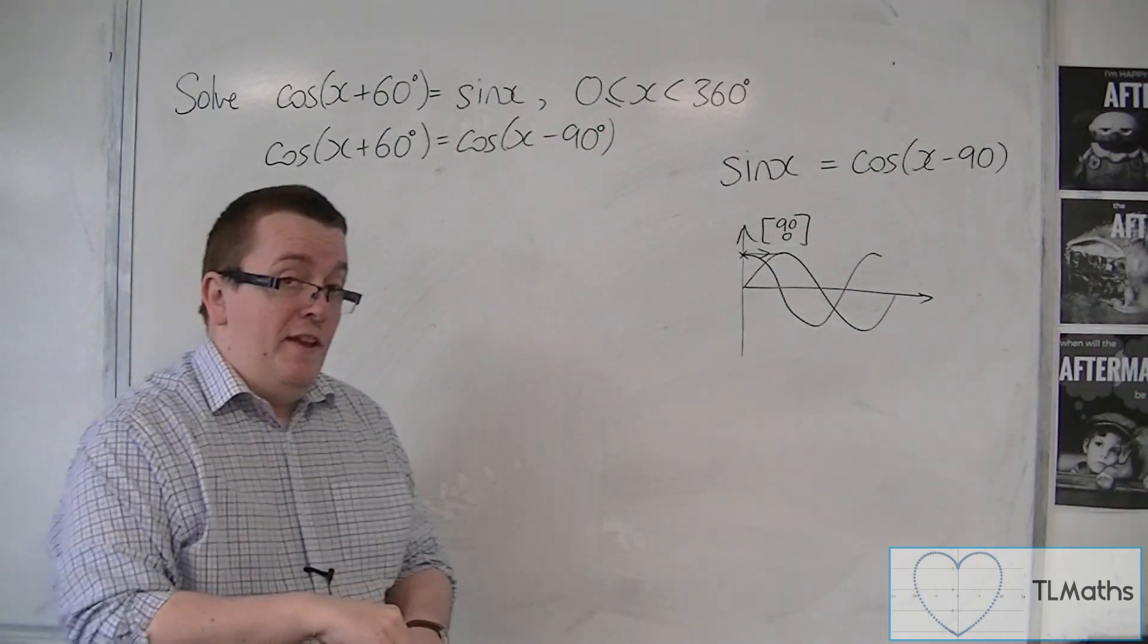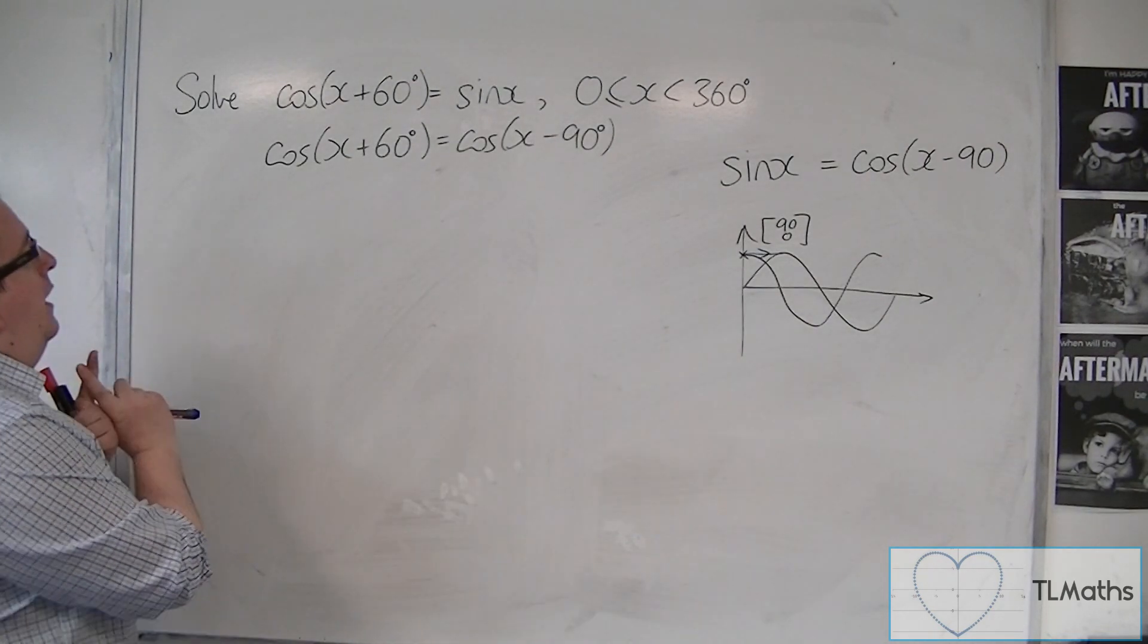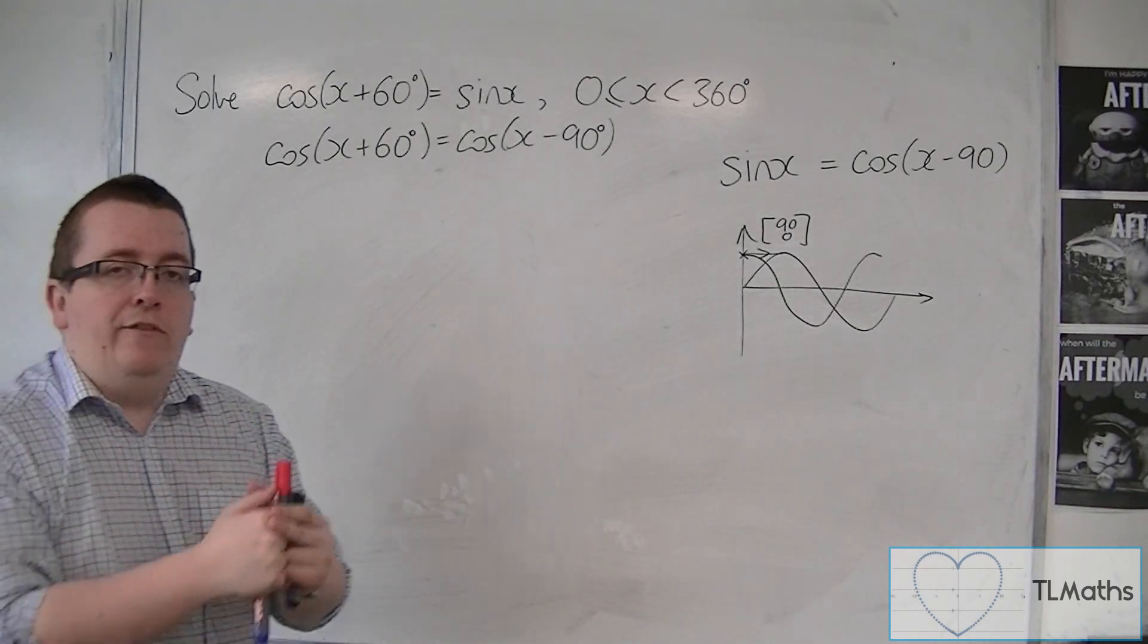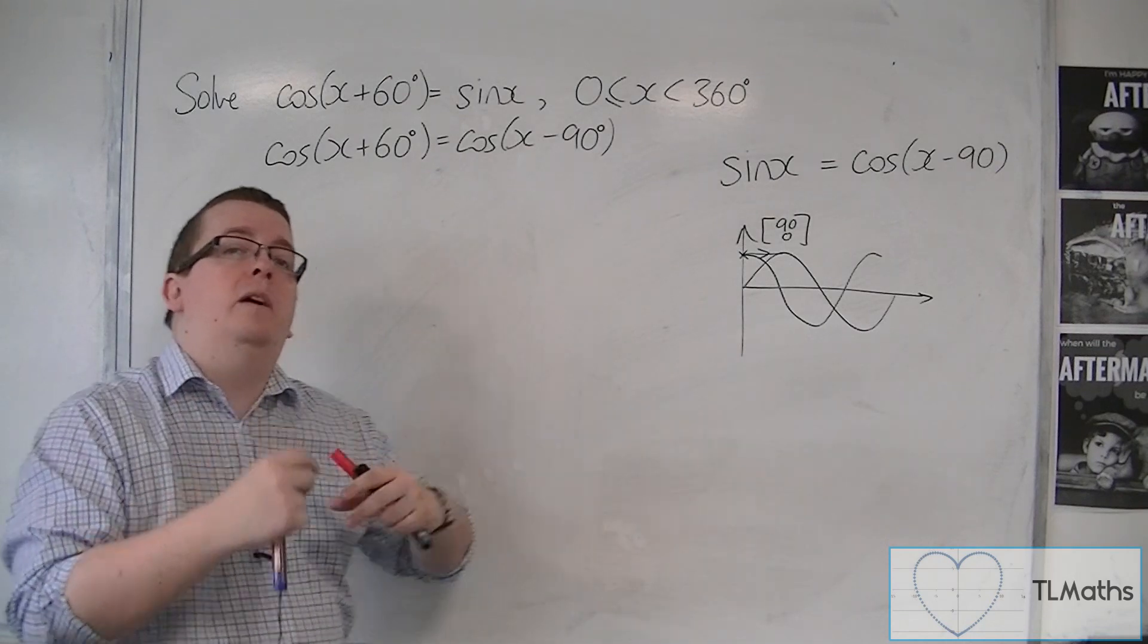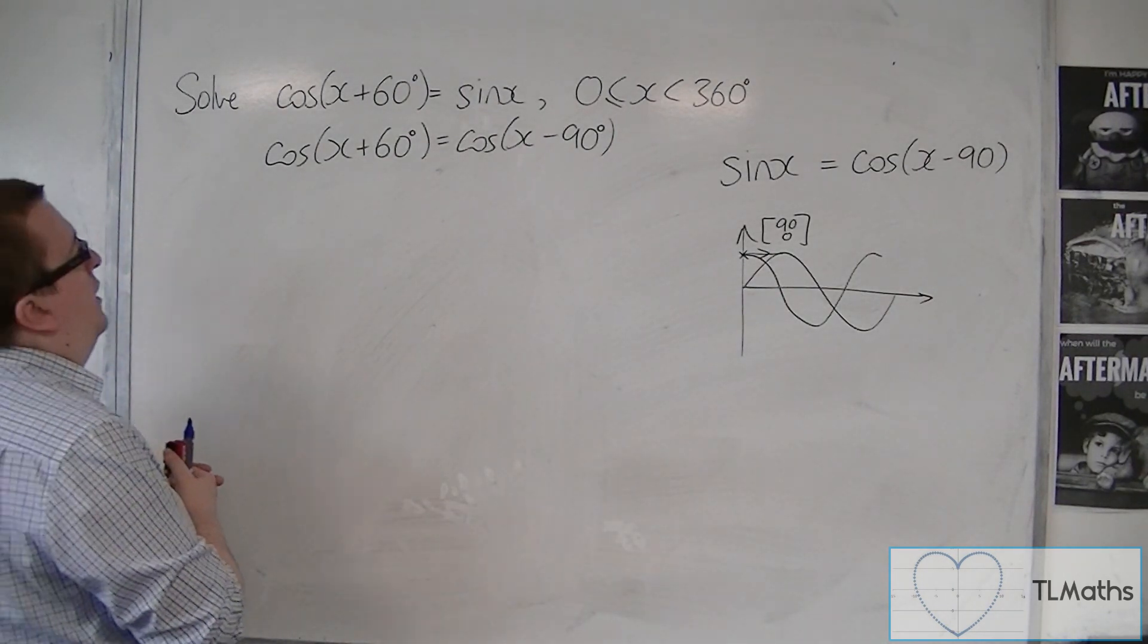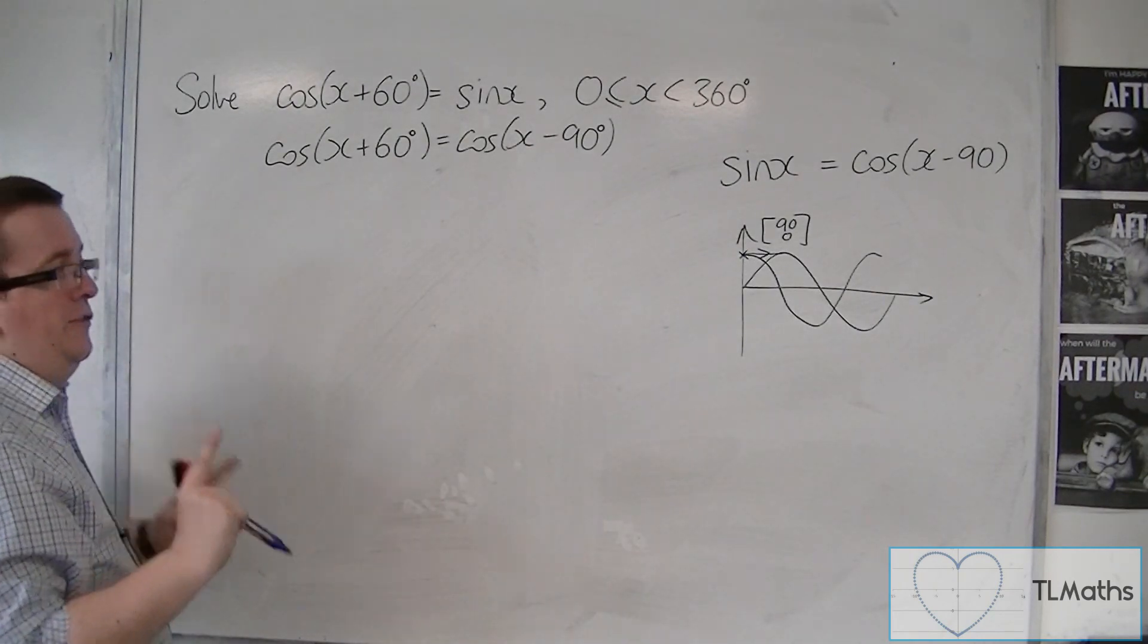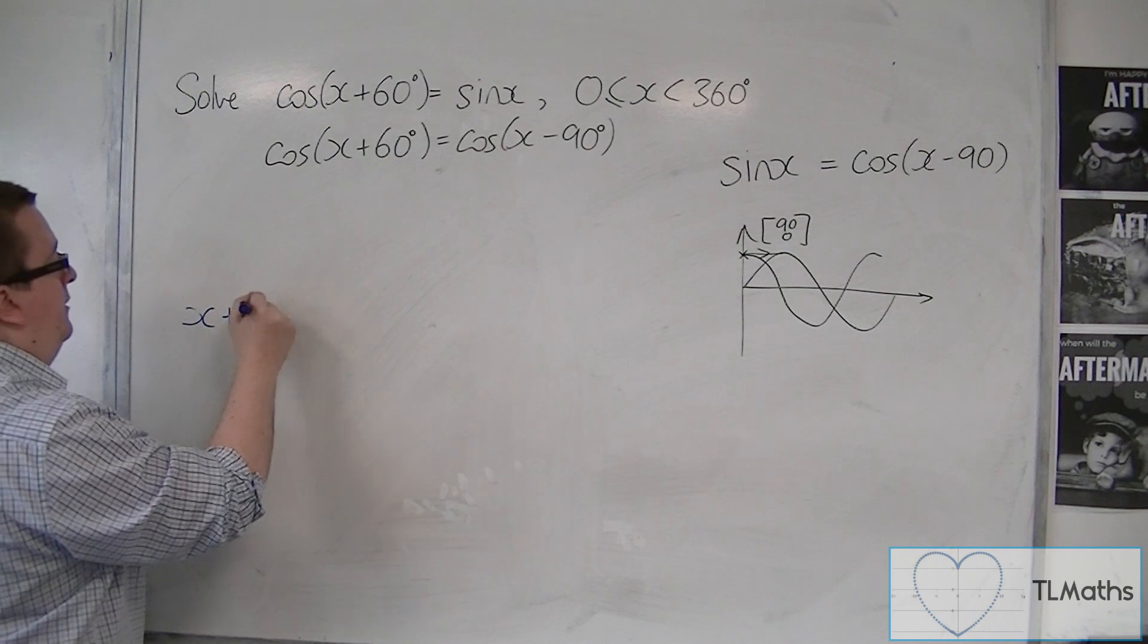Now, at this stage, we then have the problem of we've got two cosines. But if cosine of one number must be cosine of another number, then those two numbers should be equivalent, should be the same. What I can do is I can put one equal to the other. This isn't the correct approach at this stage, but I want to show you why it's not.